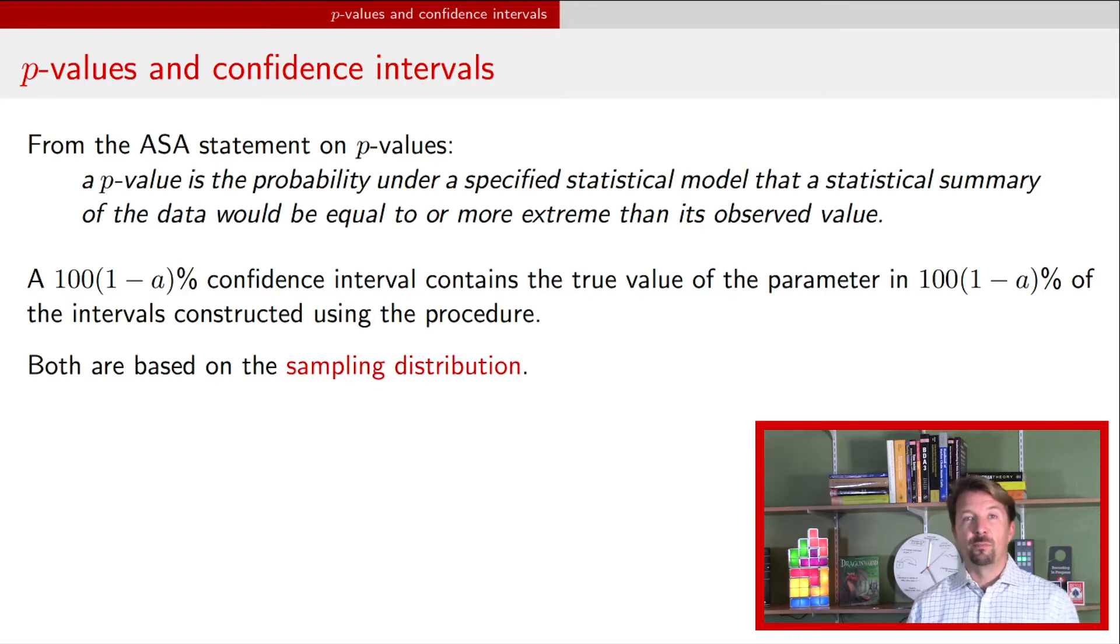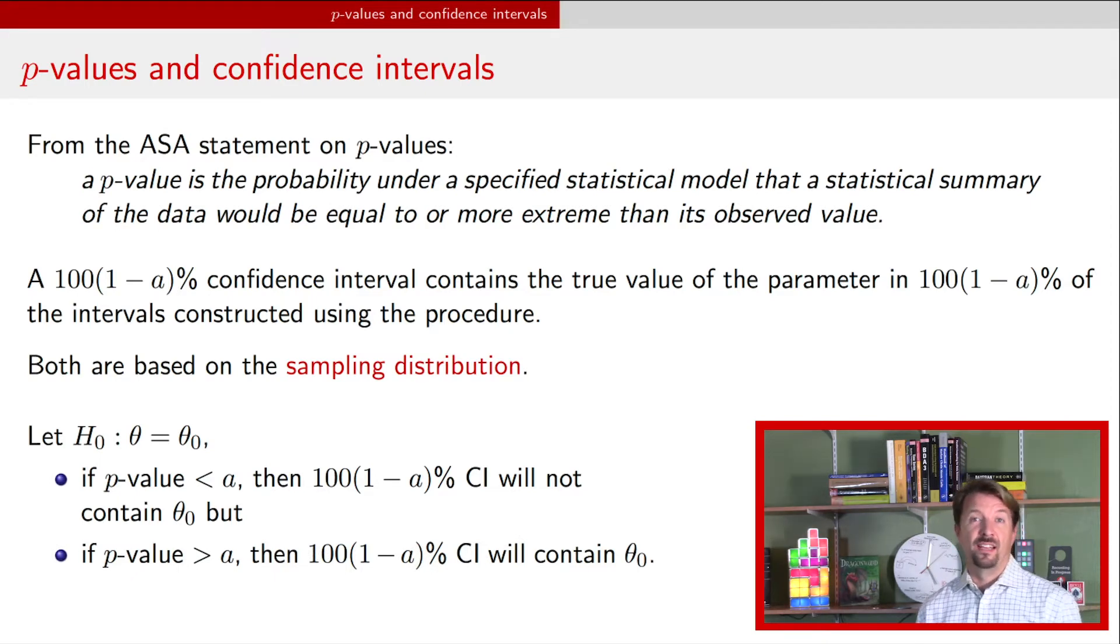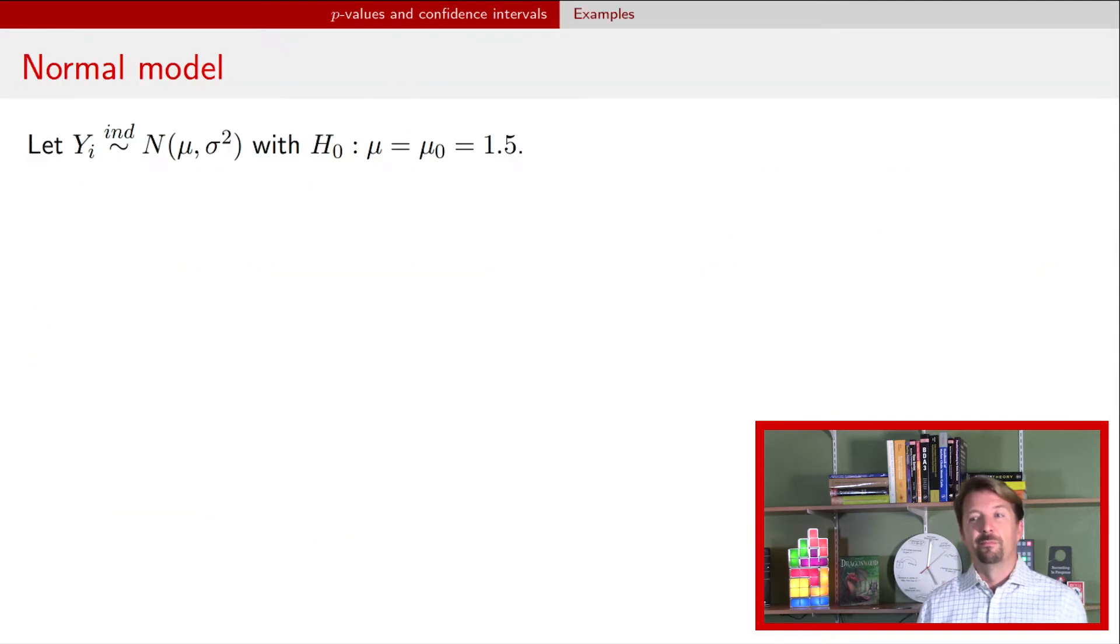And so the correspondence that I want to mention in this video is this: that if you have this null hypothesis where you have the parameter of interest is equal to a particular value here, θ₀, then there are two situations that could occur. Perhaps the p-value is less than a particular threshold, α called the significance level. And if that p-value is less than α, then a confidence interval constructed using a confidence level 1 minus that value of α will not contain that value θ₀. The opposite has the opposite result. So if the p-value is larger than α, then that same confidence interval will contain the true value θ₀. So this is the correspondence that I want to talk about. So let's get some examples and maybe it will become more concrete.